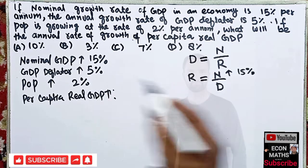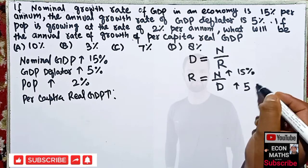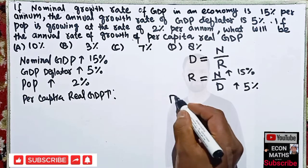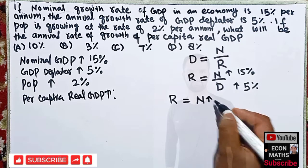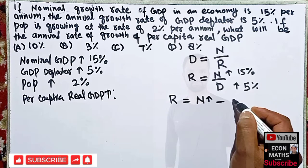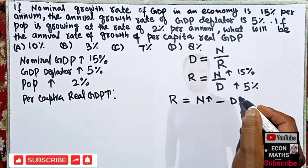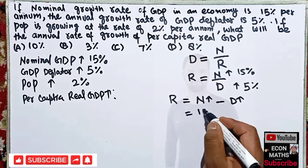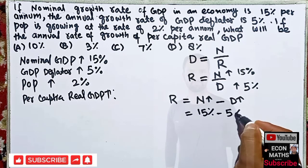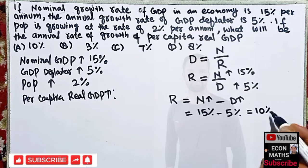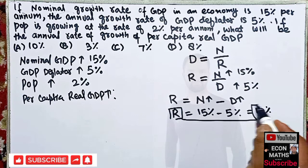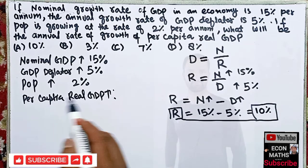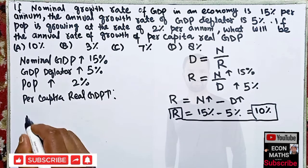Since nominal GDP has increased by 15 percent and the GDP deflator is increasing by 5 percent, the percent increase in real GDP equals the percent increase in nominal GDP minus the percent increase in the GDP deflator — that is, 15 percent minus 5 percent, which comes out to be 10 percent. So our real GDP has increased by 10 percent.